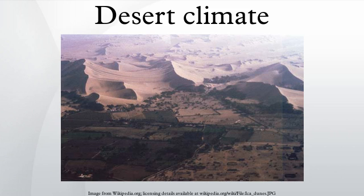Desert climate, also known as an arid climate, is a climate that does not meet the criteria to be classified as a polar climate, and in which precipitation is too low to sustain any vegetation at all, or at most a very scanty shrub.